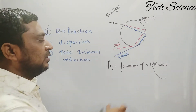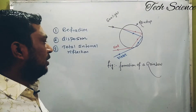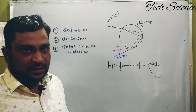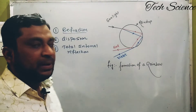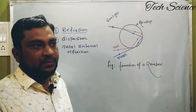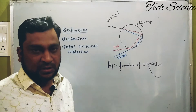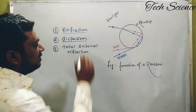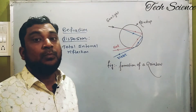The rainbow is a combined effect of all three phenomena. Refraction is the phenomenon of light passing from one transparent medium into another, where a slight deviation of light occurs. Dispersion means the white light gets split into its component colors.